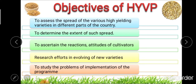The implementation problems were studied at different levels of administration — state level, district level, block level, and village level. In summary, the five objectives are: spread of variety across the country, ascertaining cultivator attitudes, research in evolving new varieties, and studying implementation problems.